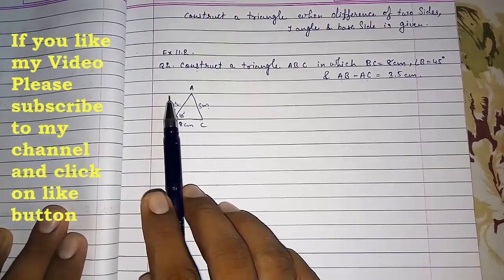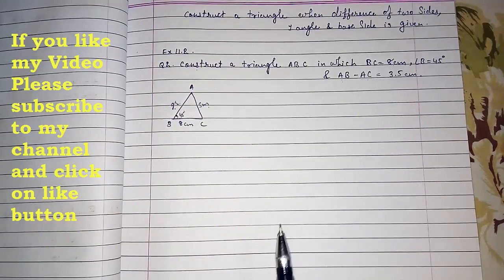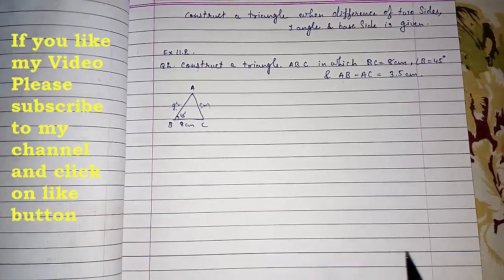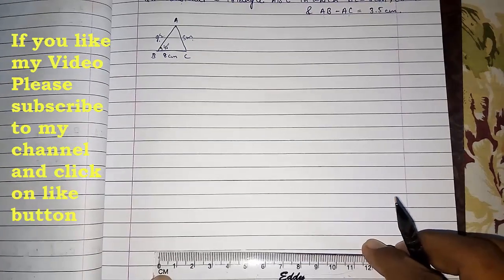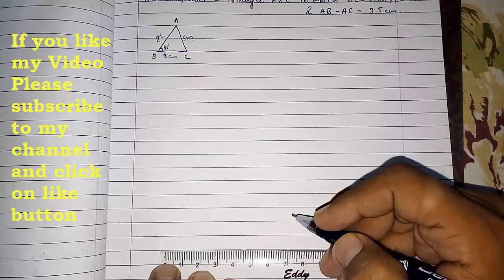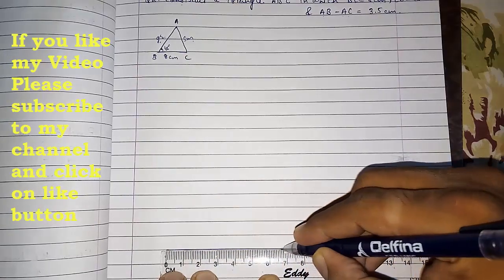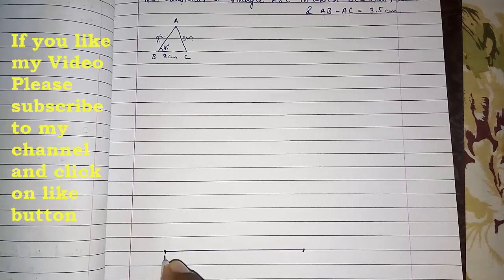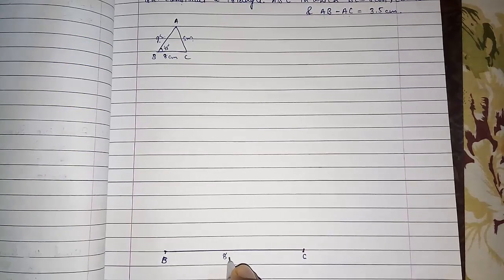The same way what we had done in our first question, we have to do. So we are going to start by drawing the base side of 8 cm. I am going to draw it with pen because you will not be able to see if I draw it with pencil. So these are the two base points, this will be B and this will be C, and this is 8 cm.